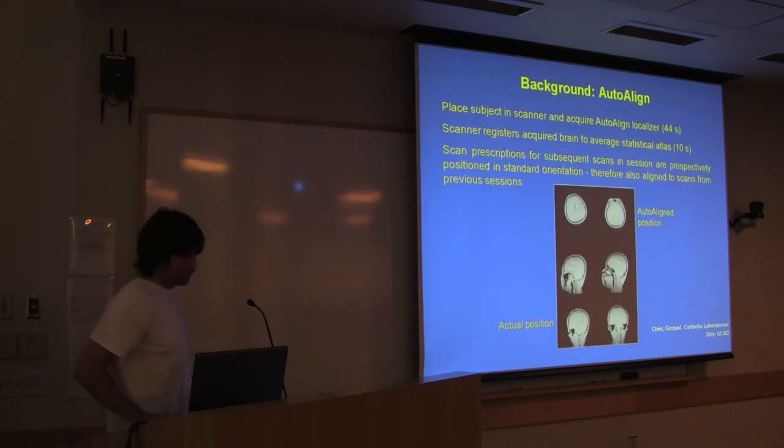Okay, so I just wanted to point out that there's a technology on the Siemens scanner called Auto Align. What it does is you put the person in the scanner, it measures the position of the person's head, compares it with an atlas, which is in a stereotaxic position, and then every scan from that point on is aligned to that atlas. So that way, if you scan the same person more than once, they'll be scanned in the same position. And in a cross-sectional study, all your subjects will be more or less scanned in the same position.